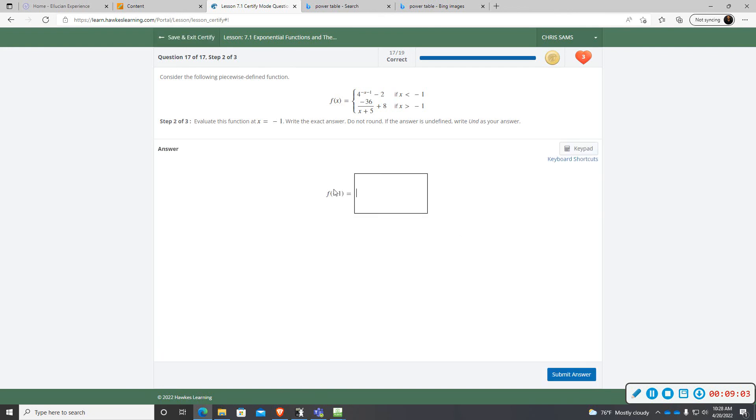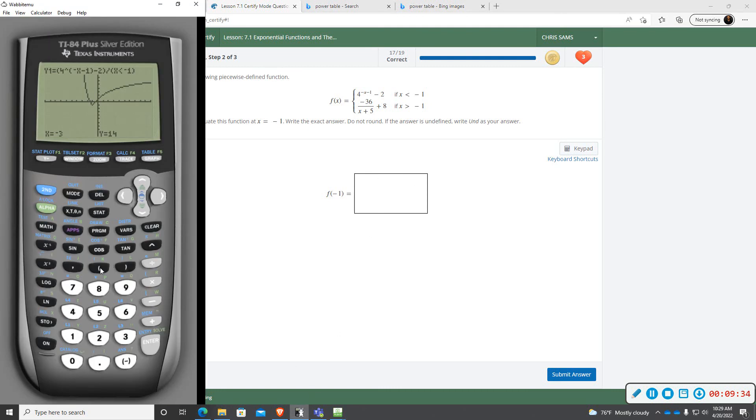Part 2, I want you to plug in negative 1. So notice both of these tell you something in relation to negative 1 but none of them have equality. So none of these inequality symbols have an underline. So we cannot be equal to negative 1 on either case. So we will not get an output. And it says if the answer is undefined write U N D. So there is no output for negative 1. If I type negative 1, I'm not getting an output. So it is undefined.